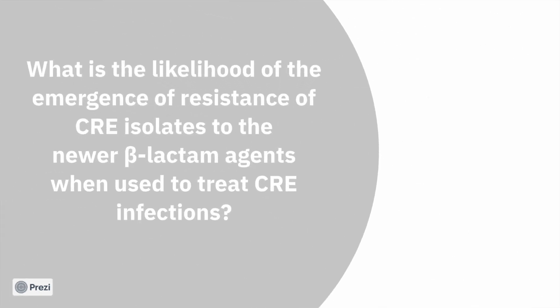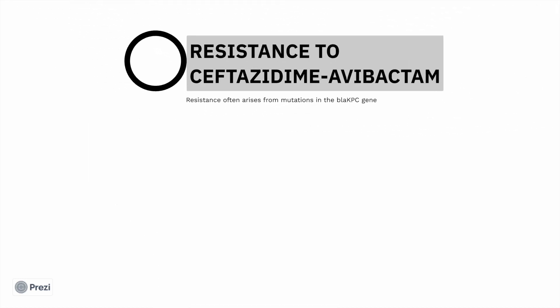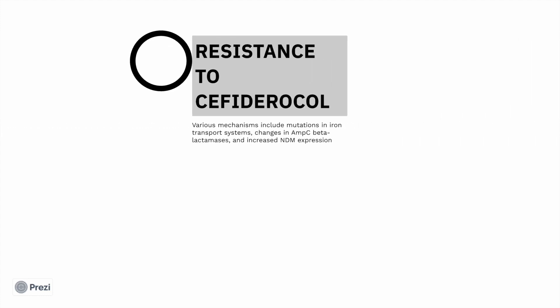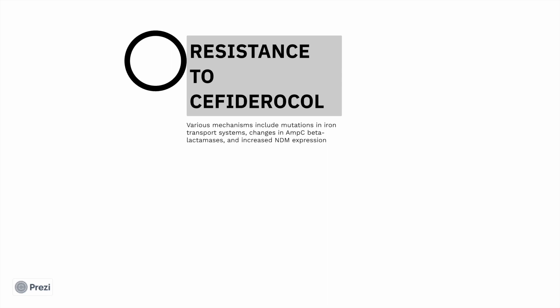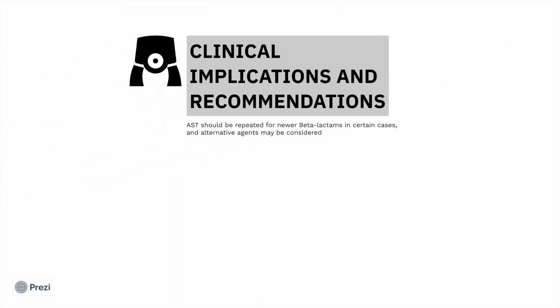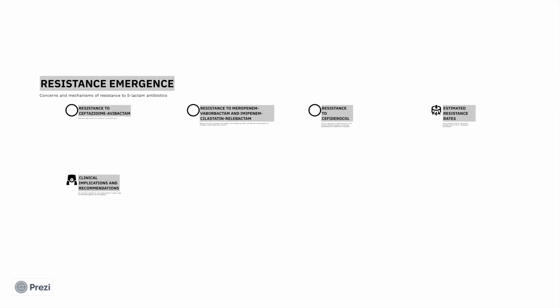Regarding the likelihood of resistance emergence with these newer agents: resistance to ceftazidime-avibactam arises by mutation in the BLA-KPC gene. For meropenem-vaborbactam and imipenem-cilastatin-relebactam, resistance primarily comes from permeability and efflux changes, also associated with increased BLA-KPC gene copy numbers. Resistance to cefiderocol involves various mechanisms including iron transport systems, changes in AmpC, BLA-KPC gene, and increased NDM expression. Estimated resistance rates are 10–20% for ceftazidime-avibactam and 3% for meropenem-vaborbactam. Clinically, AST should be repeated for newer BLA-KPC cases and alternative agents considered if resistance emerges.